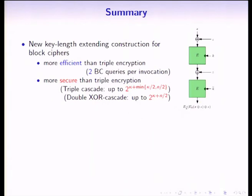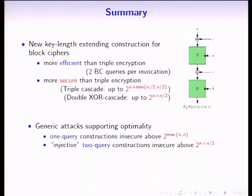In summary, we presented a new key-length-extending construction for block ciphers that is more efficient than triple encryption, requiring only two block cipher calls per invocation, and also more secure than triple encryption for certain parameters of kpa and n. We also give generic attacks supporting the optimality of our construction: any one-query construction is insecure beyond 2^max(kpa, n) queries, and no two-query injective construction can be secure beyond 2^(kpa + n/2), which is exactly the bound achieved by our construction. Thank you very much.